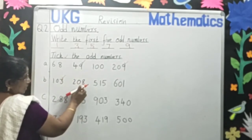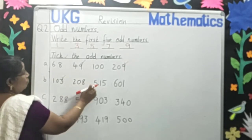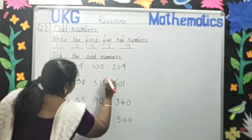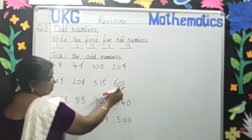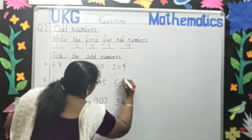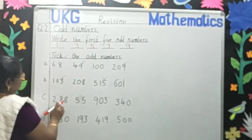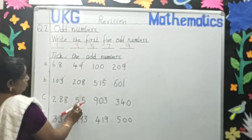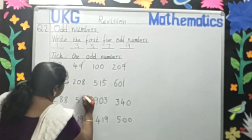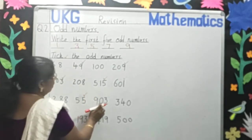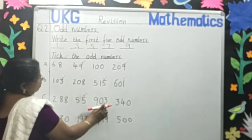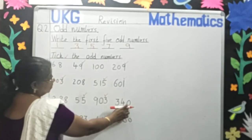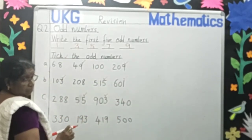Two hundred and eight. Eight is the odd number? No. Five hundred and fifteen. Five is the odd number? Yes, put the tick. Three hundred and four. Three is the odd number? Yes, put the tick. Nine hundred and three. Three is the odd number? Yes, put the tick. Three hundred and forty. Zero is the last number. Zero is the odd number? No.